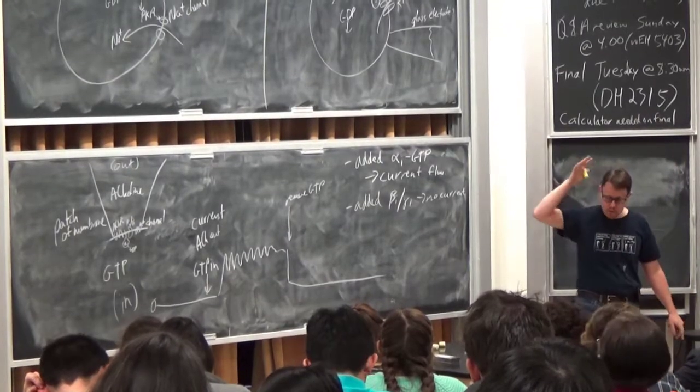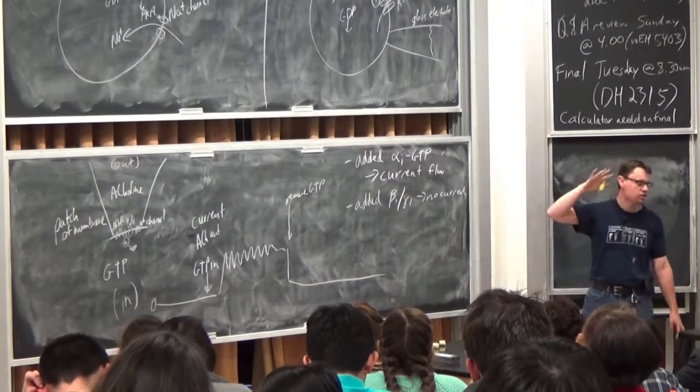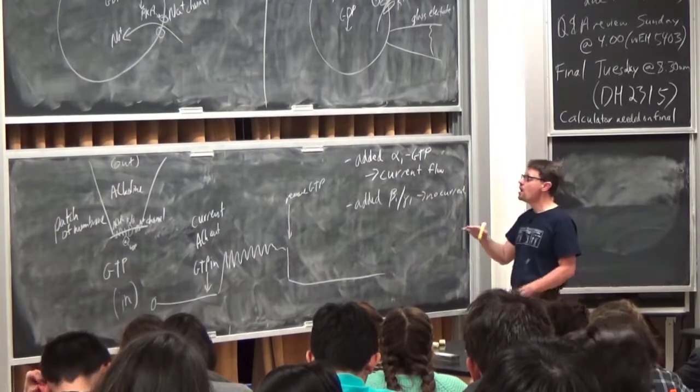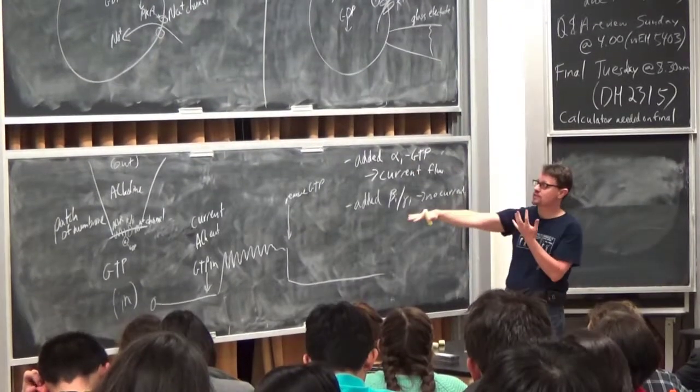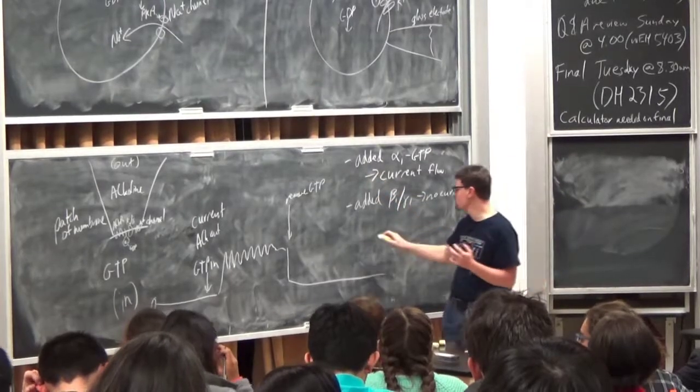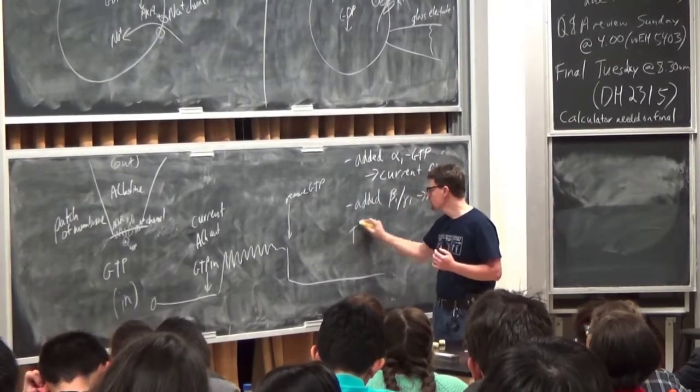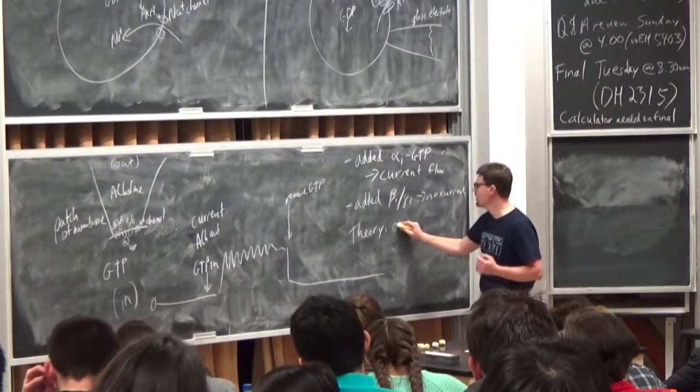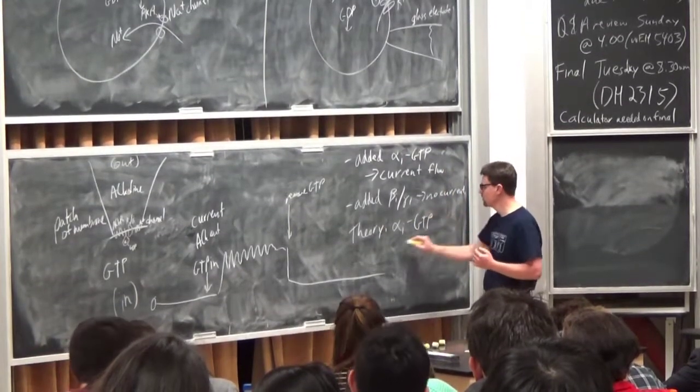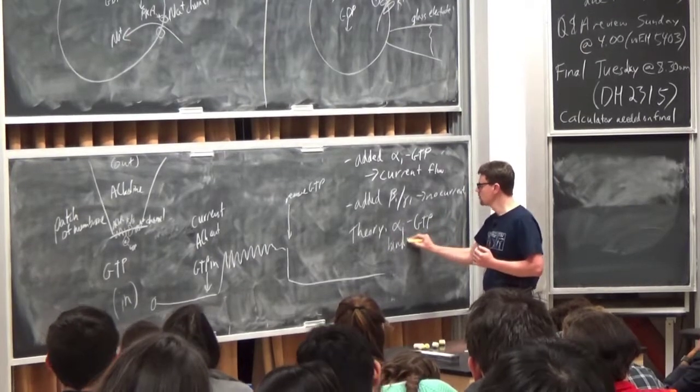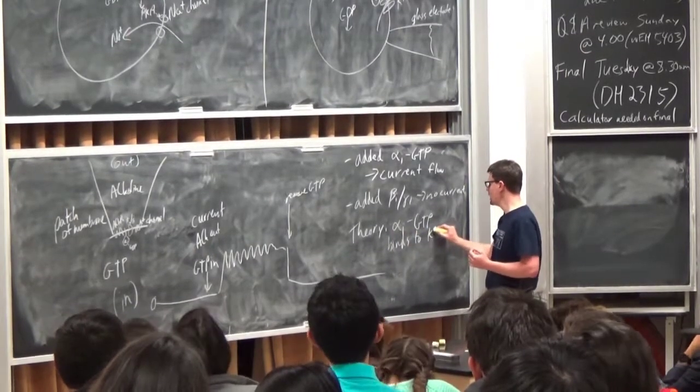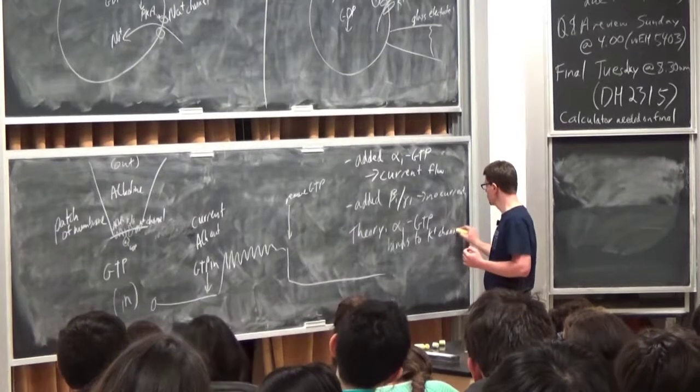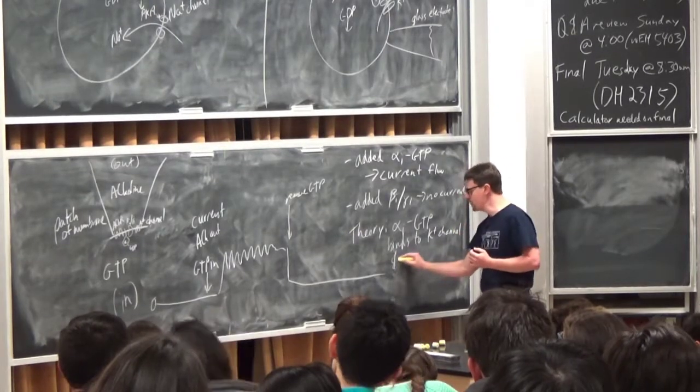Okay, so, one question for people to discuss for the next two minutes or so is, we consider in all of this, and in this model here, so his idea, so the idea that he came up with, is that alpha plus GTP binds to the potassium channel and opens it.